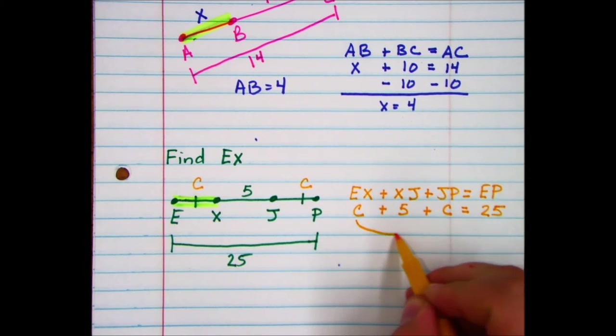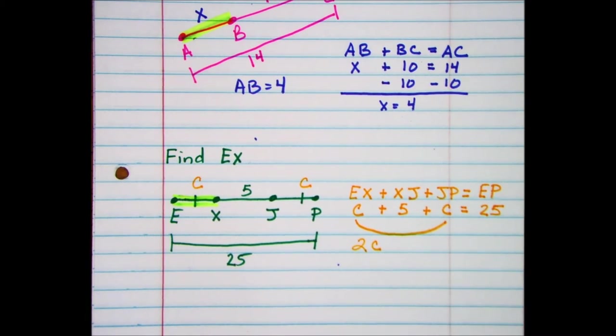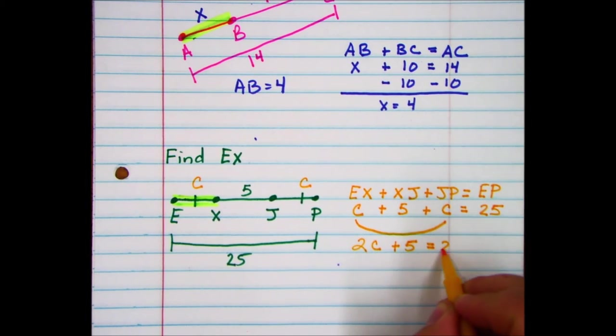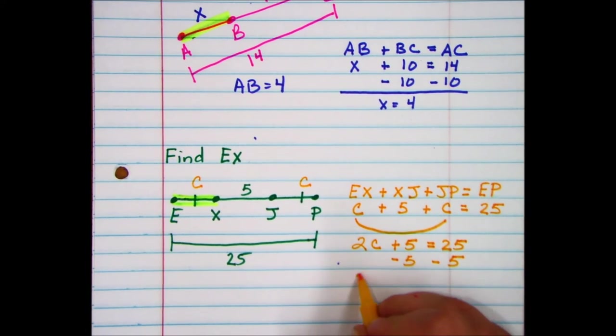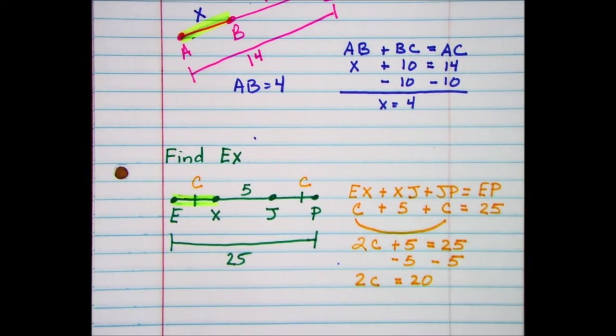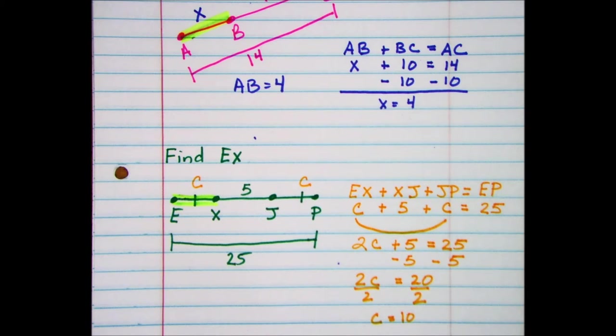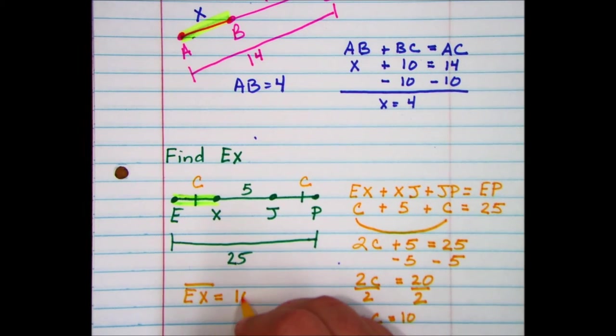Now solve for x. We're going to count the number of x's I have. I have 2x plus 5 is equal to 25. And solve for x. Minus 5 from both sides. Left with 2x equals 20. Going to divide by 2 on both sides. And x equals 10. And therefore, EX also equals 10.